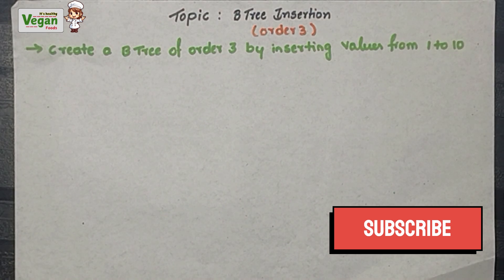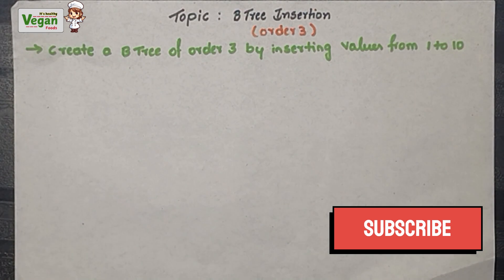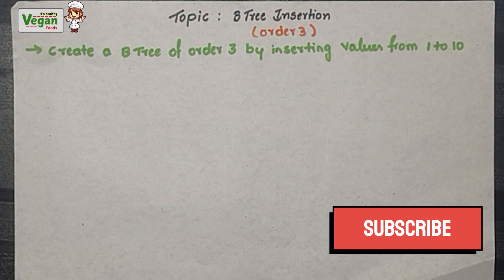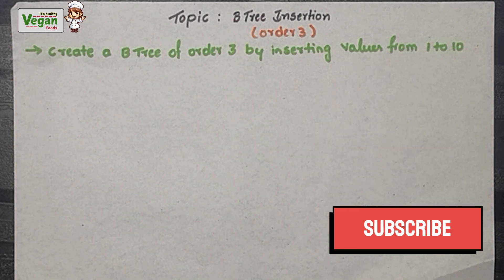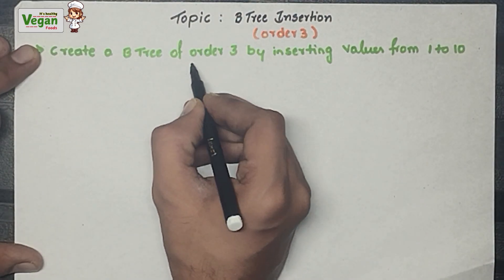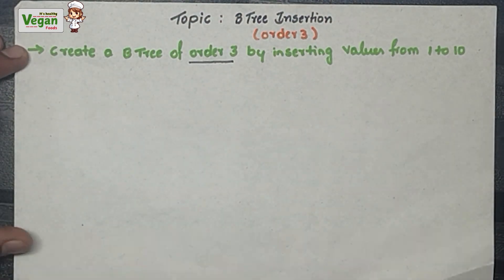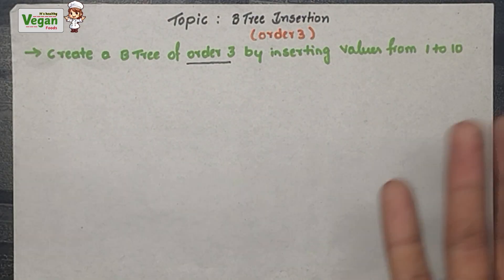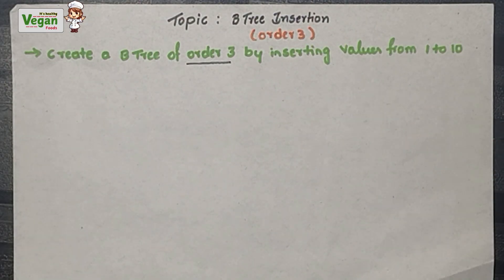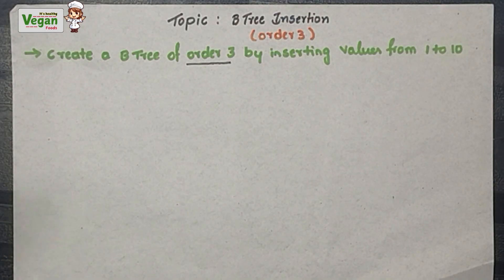Hello everyone. In this video let's discuss about the B-tree insertion. If you are new to our channel please subscribe for more engineering related topics. Now the problem is to create a B-tree of order 3 by inserting values from 1 to 10. There are also order 4 and order 5 insertion types — those video links are given in the description.